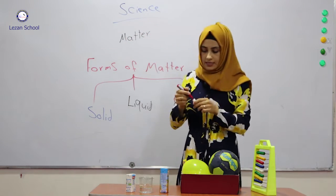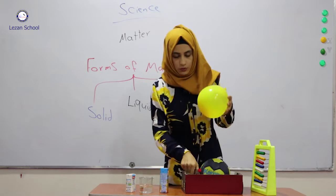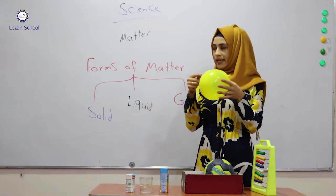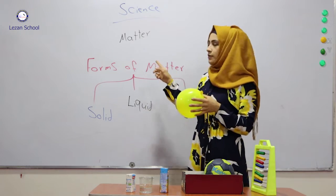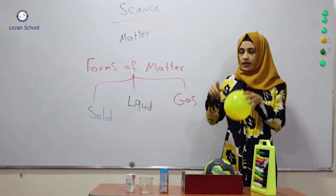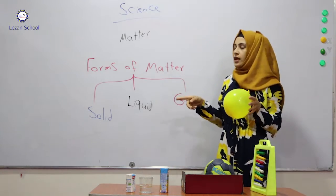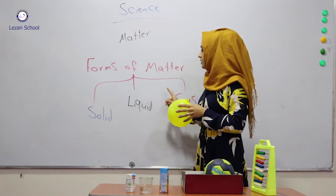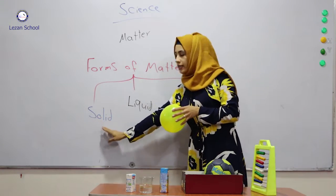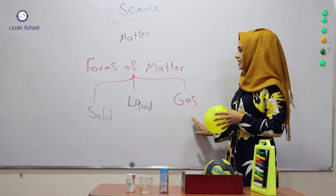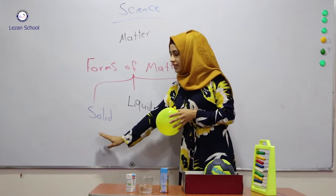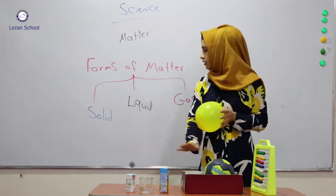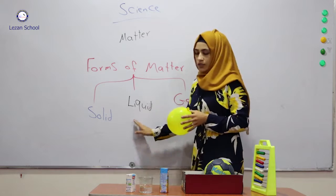We also have another type which is gas. For example, this air is gas — this air that we have in this balloon is gas. So matter has three forms: solid, liquid, and gas.